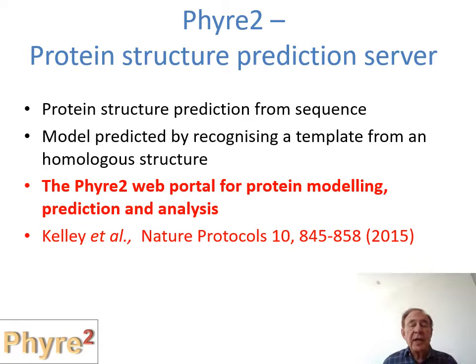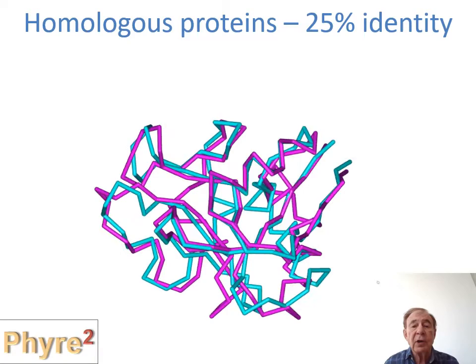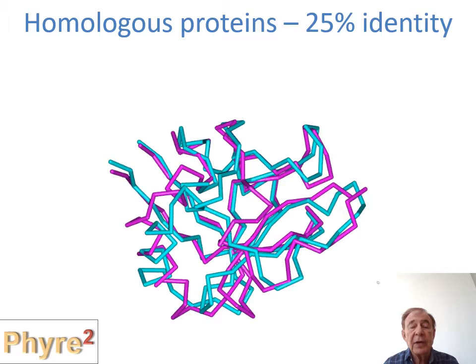Starting with PHIRE2, its aim is to predict protein structure from sequence, and the approach is recognizing a template of known structure from a homologous sequence. The paper describing it is in Nature Protocols and has received thousands of citations. The principle is that homologous proteins have similar 3D structures — here we see the main chain trace of two proteins with 25% identity.